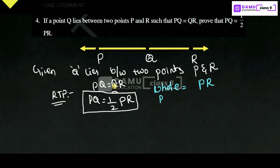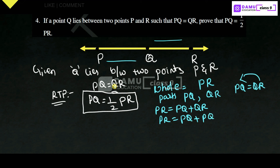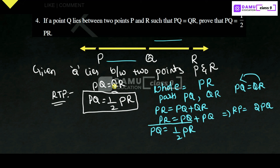Since the whole equals the sum of its parts: PR equals PQ plus QR. Since PQ equals QR (given), we substitute QR with PQ: PR equals PQ plus PQ, which gives PR equals 2 PQ. Therefore, PQ equals one-half of PR. This is what we needed to show.